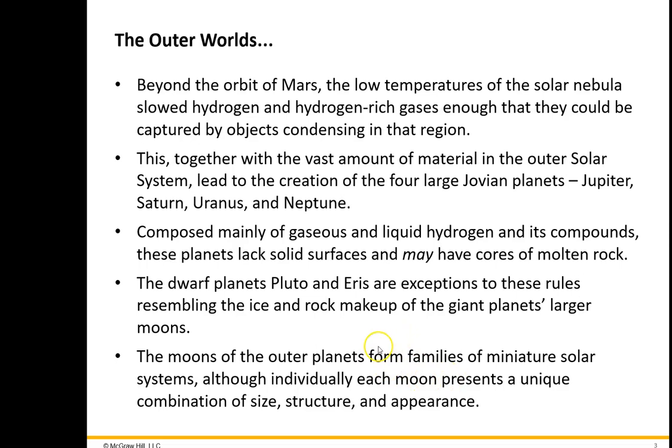The moons of the outer planets form little miniature solar systems of their own. Jupiter has close to 70. It starts to beg the question, what exactly is a moon? There's all sorts of material in orbit around Jupiter, and the definition starts to break down when you get to smaller things. Some stuff resembles captured asteroids. Between the orbit of Mars and Jupiter, there is the main asteroid belt.